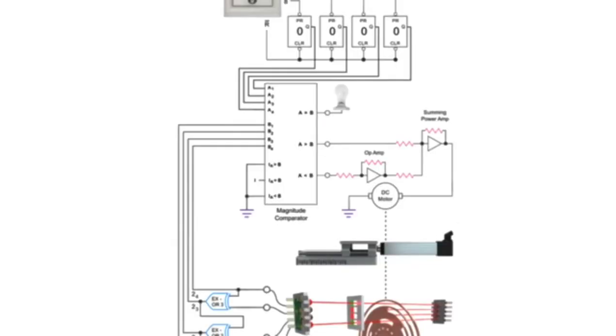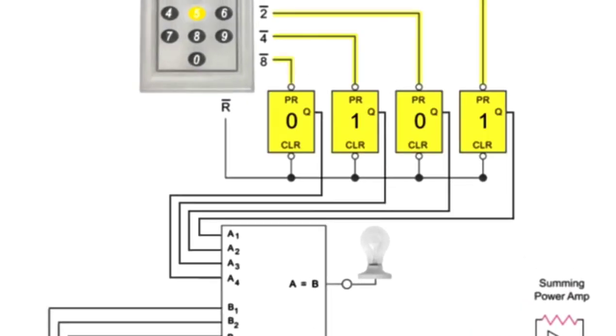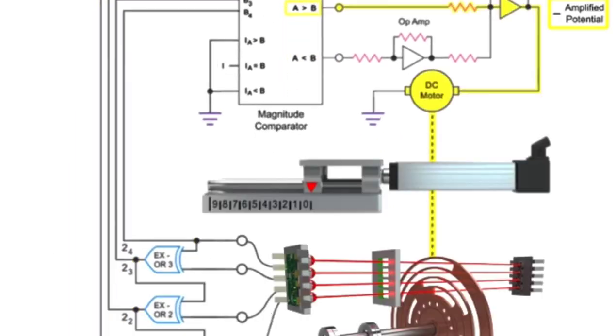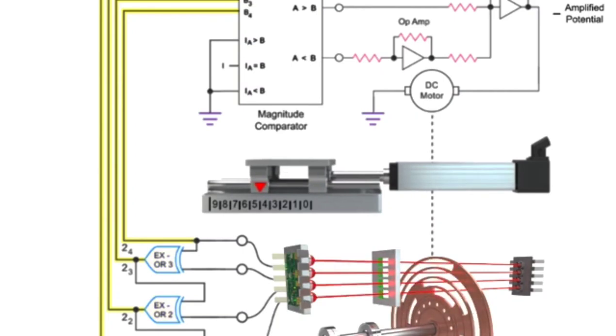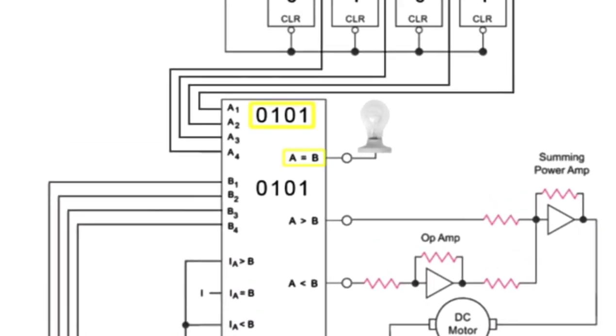Looking at the complete circuit, we can see that by entering the number 5, the A values are compared to the B values of the comparator. Amplified potential is transmitted to the actuator until the binary converted input is received by the comparator. As A becomes equal to B, the light turns on to verify the final position has been reached, completing the cycle.